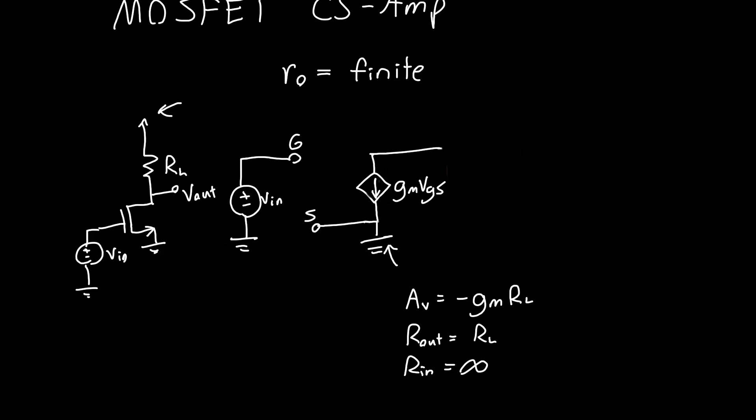So rather than RO and RL separately, we can just draw this as a single resistor with value RL in parallel with RO. And so everywhere we had an RL in our old equation, we just replace it with an RL in parallel with RO, and we're done.